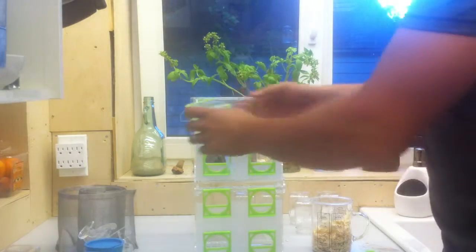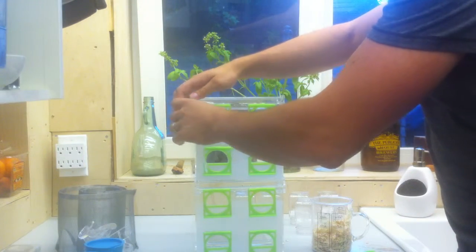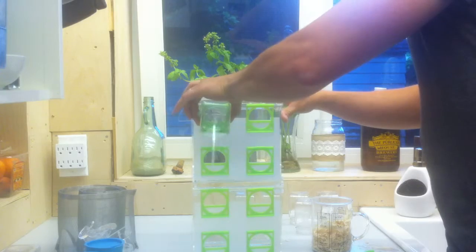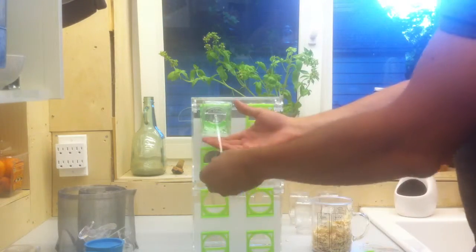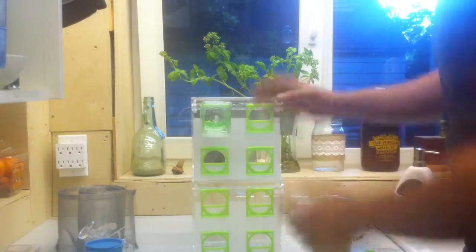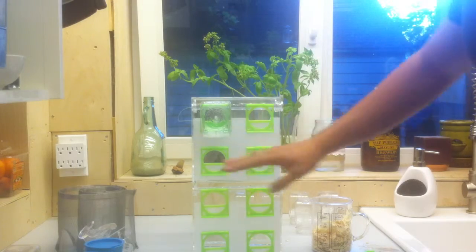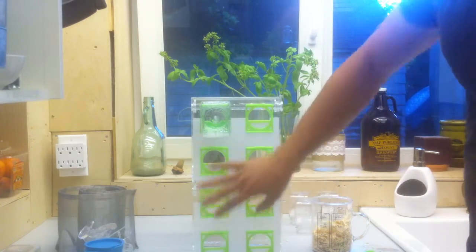Then we're going to take this, and we're going to slide it on like this. That's how you put one bottle on. So now you need to do that eight more times to set up the cricket reactor.